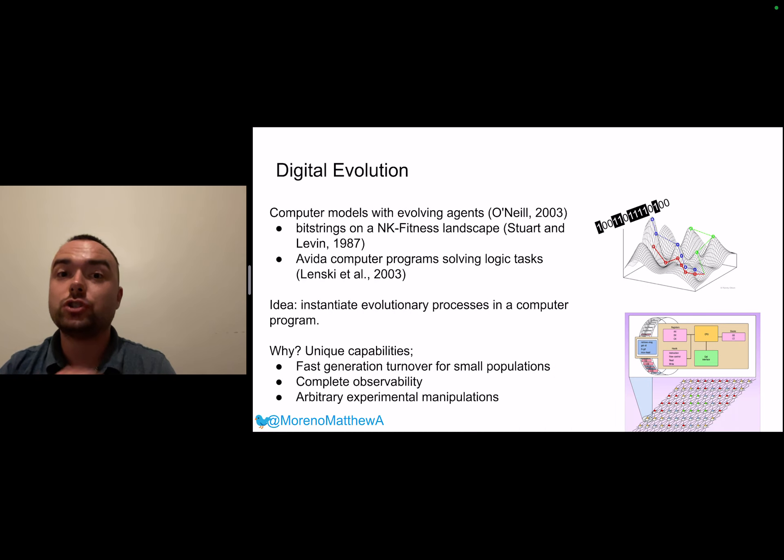Digital evolution refers to a really large class of computer models that are designed to instantiate the process of evolution in computer programs in order to better understand and to study it. Digital evolution is a really powerful tool in conjunction with wet lab studies and natural history given its unique capabilities such as fast generational turnover and the ability to do arbitrary experimental manipulations within these computer programs.